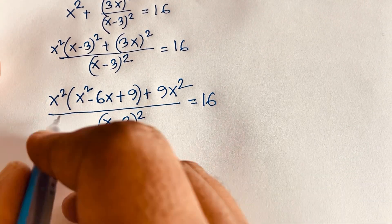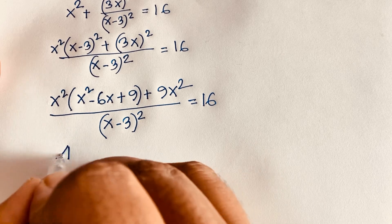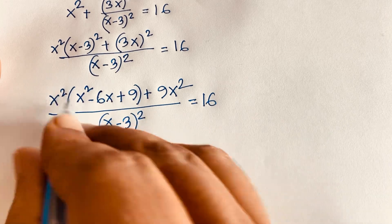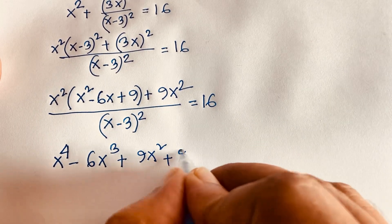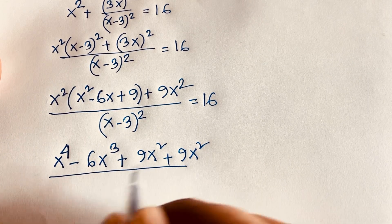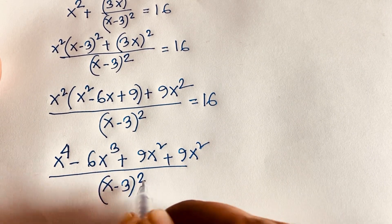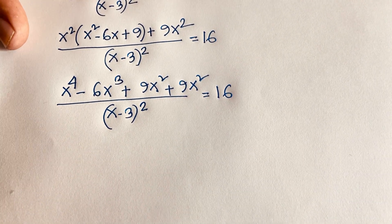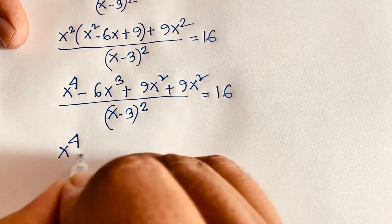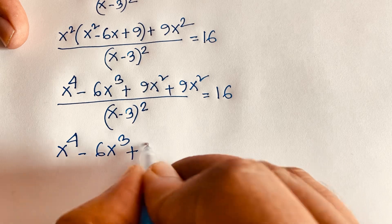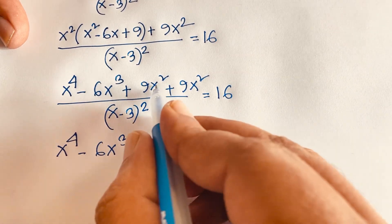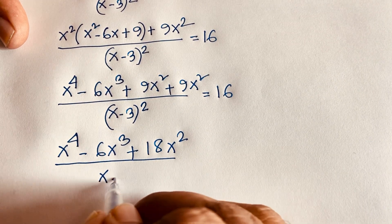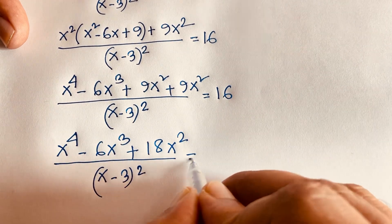Expanding: x² times (x² - 6x + 9) gives x⁴ - 6x³ + 9x², and adding the 9x² term gives x⁴ - 6x³ + 18x², all over (x - 3)², equals 16.